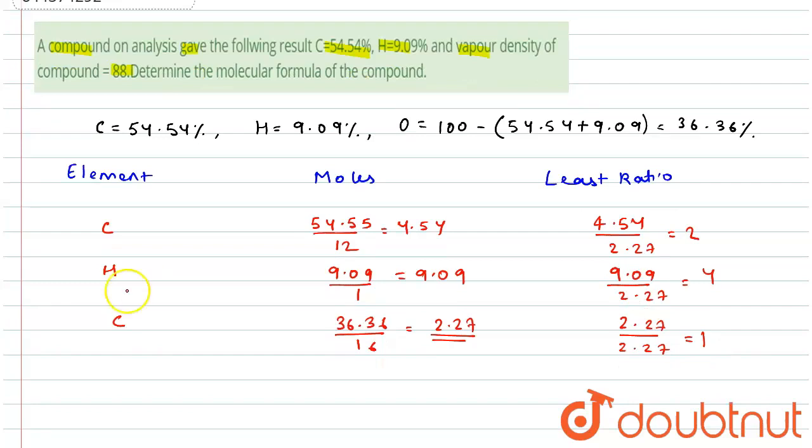So I'm getting the formula, that is the empirical formula as C2H4O, and its weight will be empirical formula weight.